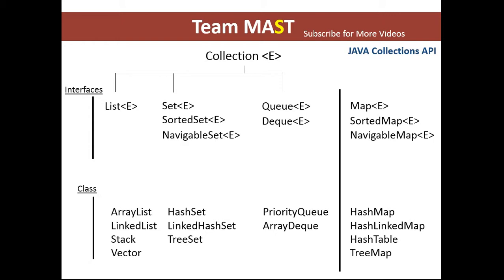The classes like HashMap, LinkedHashMap, HashTable, and TreeMap implement the interfaces like map, sorted map, and navigable map.